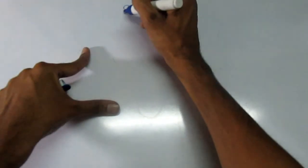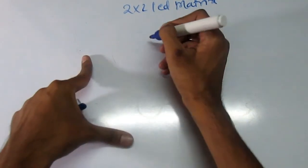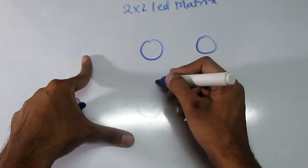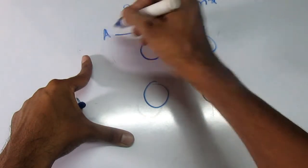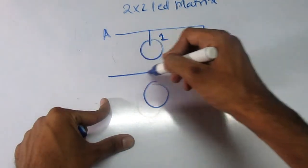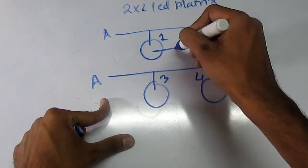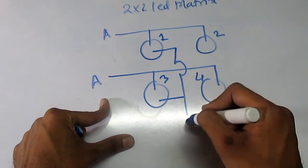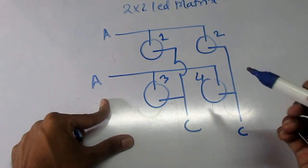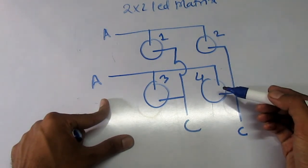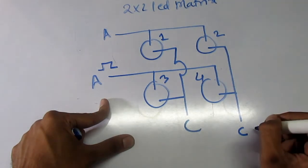This is a 2x2 LED matrix display — suppose these are 4 LEDs. We are connecting all the anodes of LED 1 and LED 2 together, and the anodes of LED 3 and LED 4 together, and connecting the cathodes of 1 and 3 together, and 2 and 4 together. So if we have to activate LED 4, we have to activate the anode line with a high pulse and the cathode line with a low pulse.